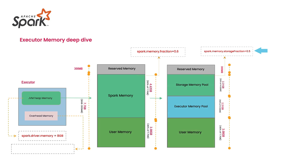Storage Memory Pool and Executor Memory Pool are roughly split 50/50. The Storage Memory Pool is used when you do caching — when you persist or cache a DataFrame or RDD, that data is stored in the Storage Memory Pool. The Executor Memory Pool is used for all computations: transformations, filters, reduceByKey, select, groupBy, and other data processing operations.